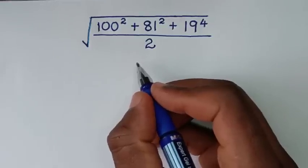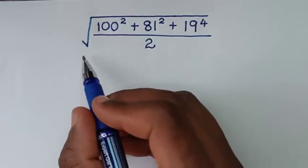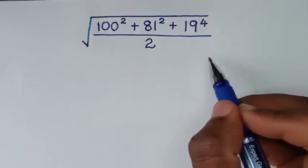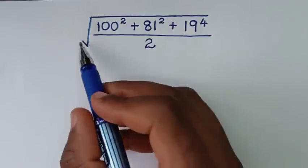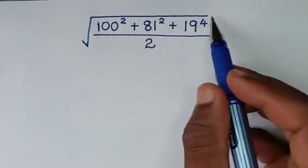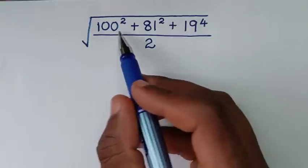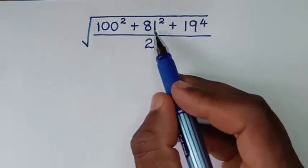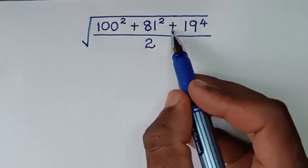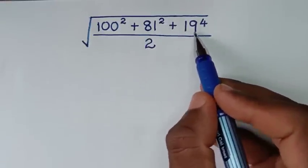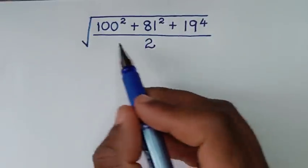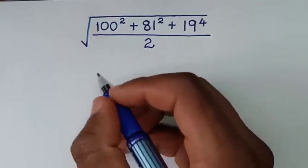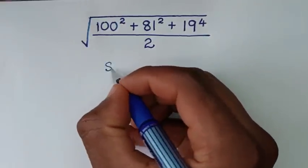Hello, you are welcome to solve this math problem, which is the square root of 100 squared plus 81 squared plus 19 to the power 4, all over 2. Now, solution.